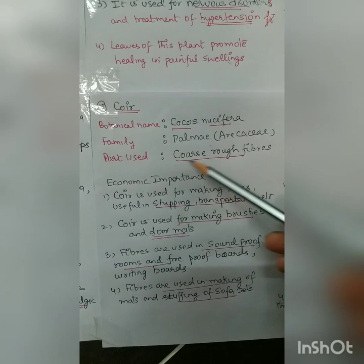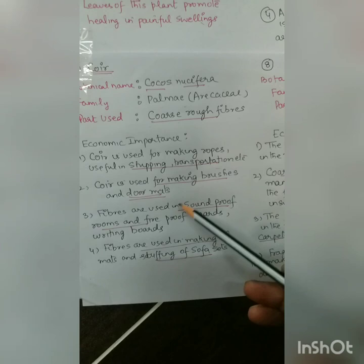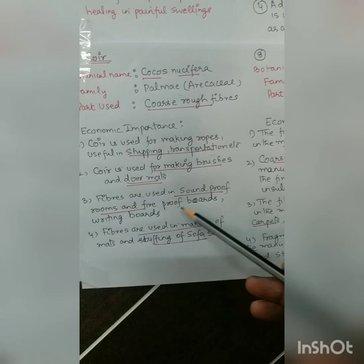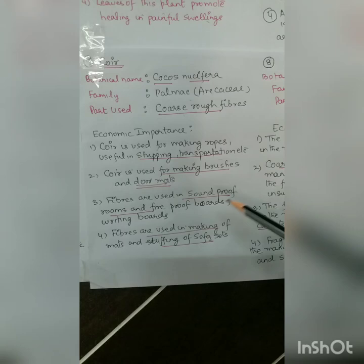Next is Coir. Botanical name is Cocos nucifera, family Palmae. Parts used are the coarse rough fibers. Coir is used for making ropes useful in shipping and transportation, making brushes and door mats, soundproofing rooms, making fireproof boats, and manufacturing mats and stuffing for sofa sets.